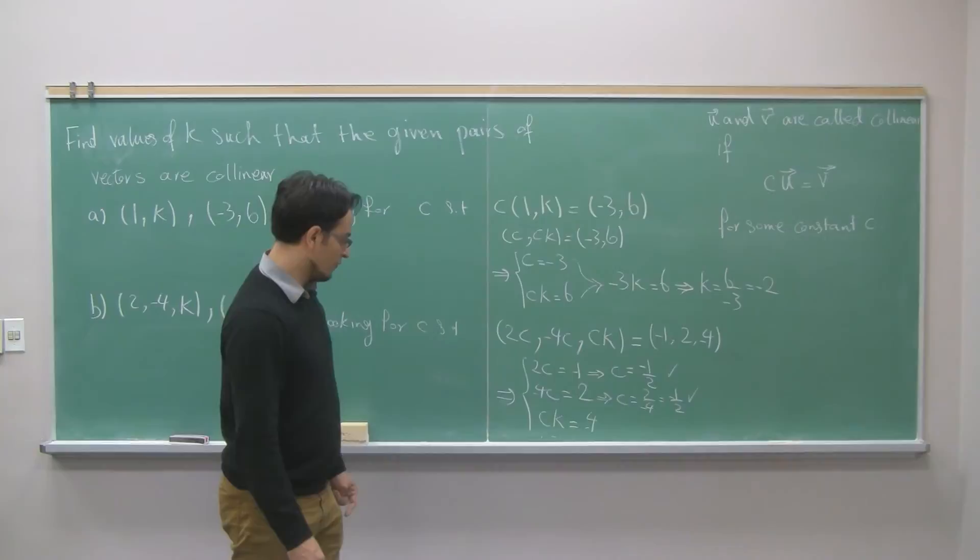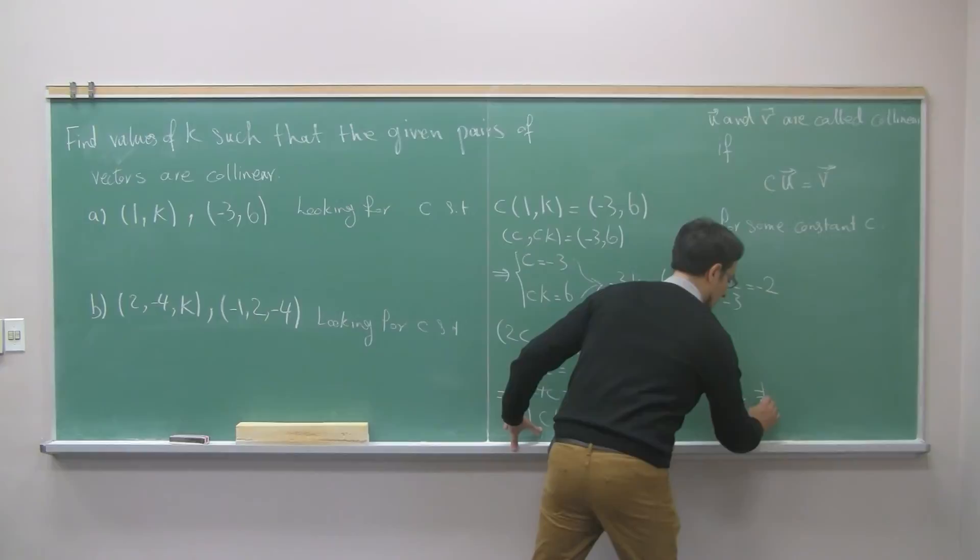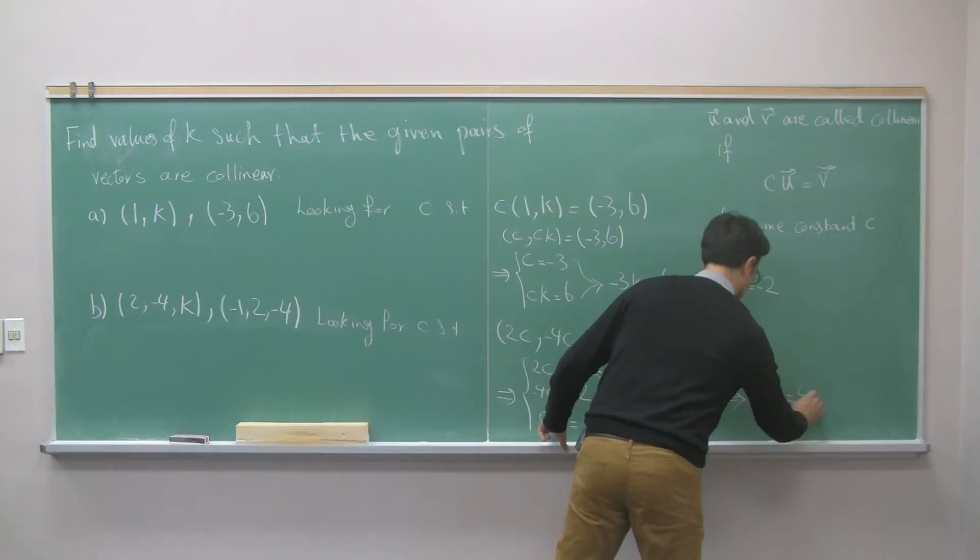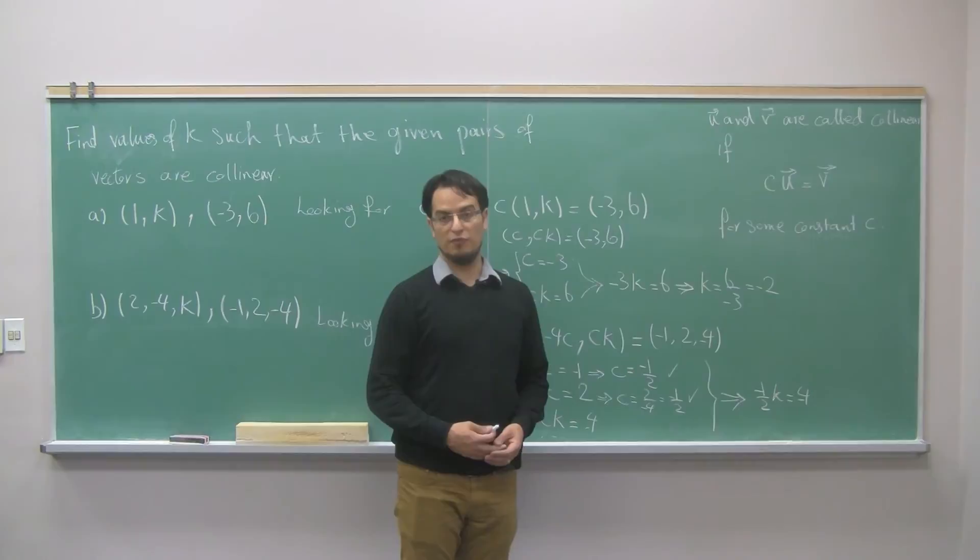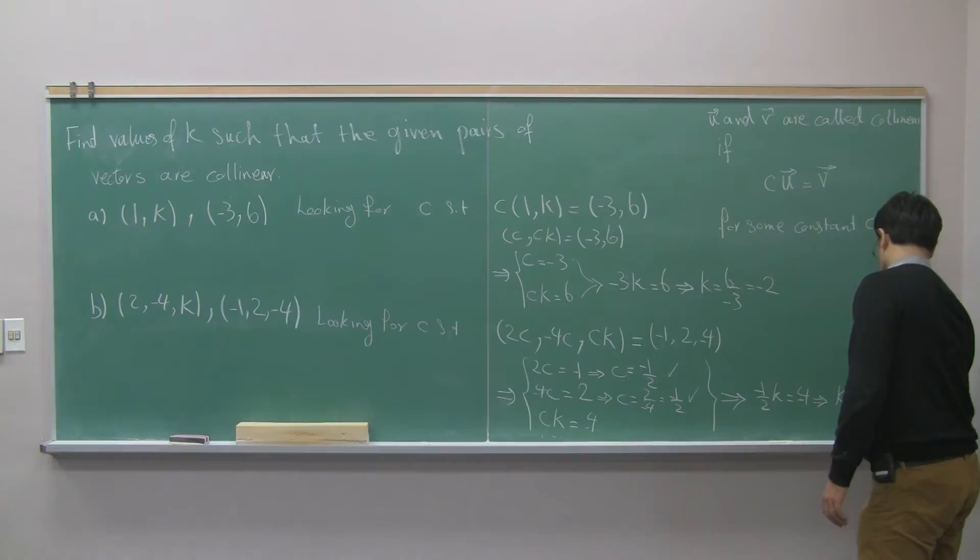Then, plug in that c in the equation with k. I have negative 1 over 2 times k should be equal to negative 4. Now, I have an equation only for k, and I solve it for k by multiplying both sides by negative 2, which gives me negative 2 times negative 4 is 8.